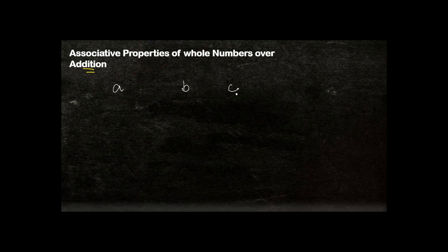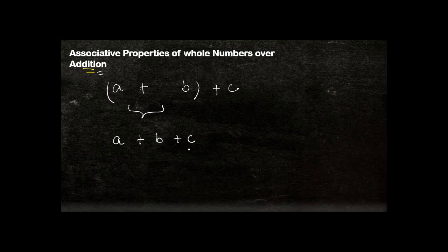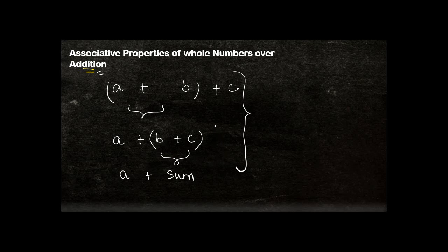Let's say you have three whole numbers A, B, and C, and you have to add all three of them together. Does it make a difference if I first add A plus B and then add C to that sum, versus if I add B plus C first and then add A? In other words, if I change the grouping of addition among any three numbers, would the result be any different?